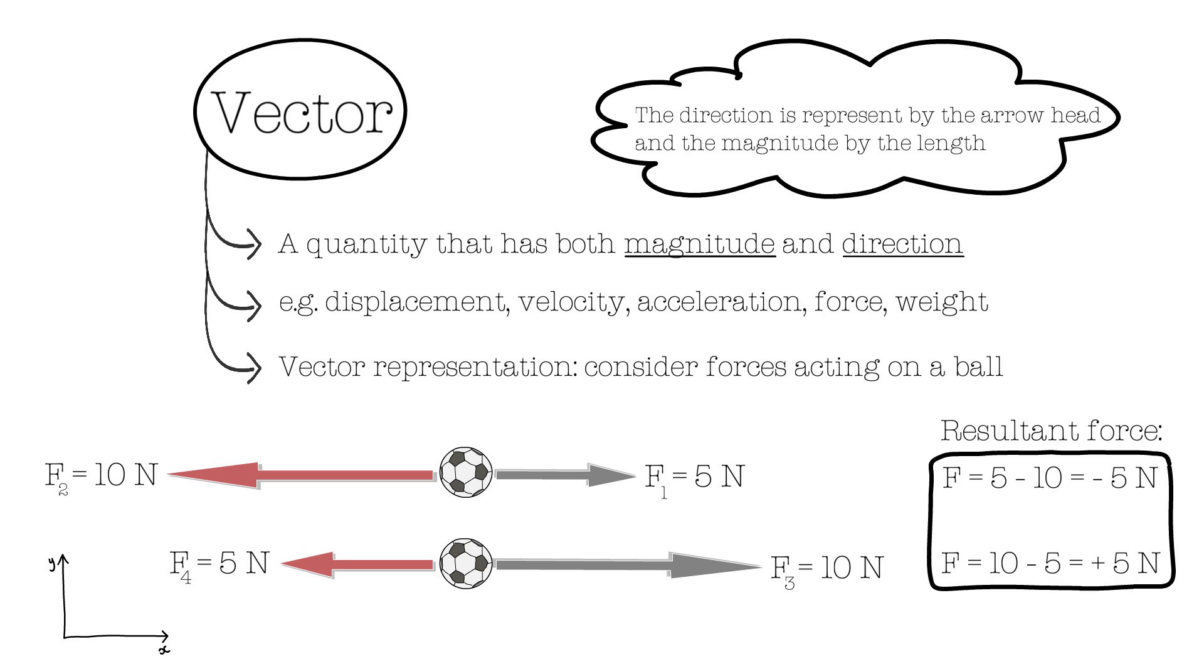Unlike scalar quantities, where the magnitudes can just be added together to get a definitive answer, it is important to take direction of the forces into account when working with vectors. If, say, the force on the object is acting in the opposite direction, the forces should be subtracted, as we saw on the example.